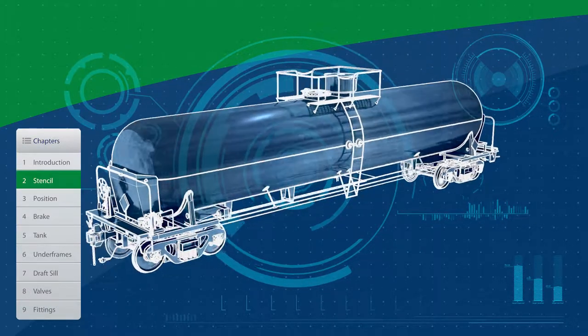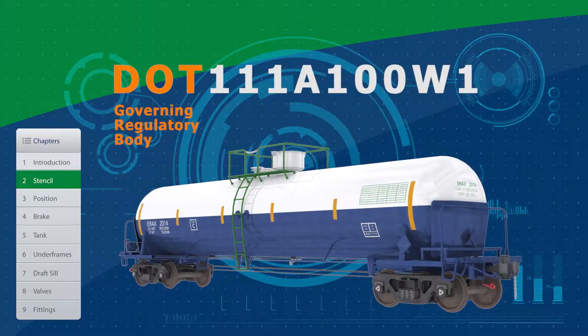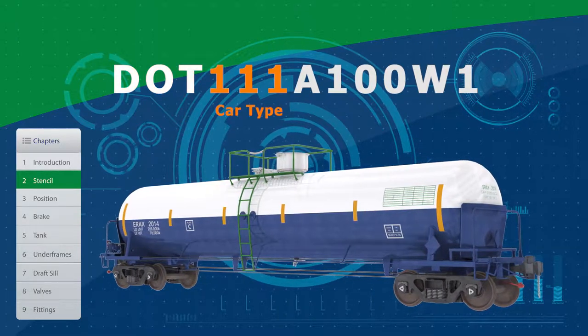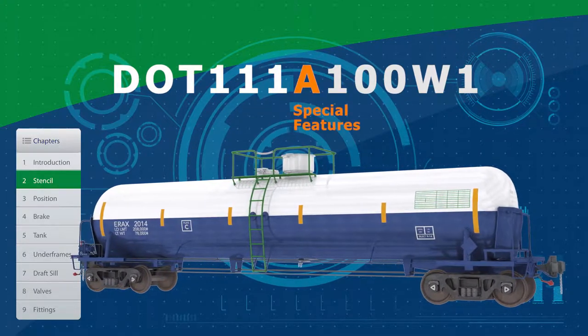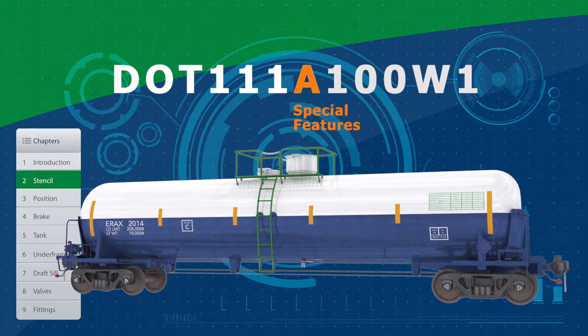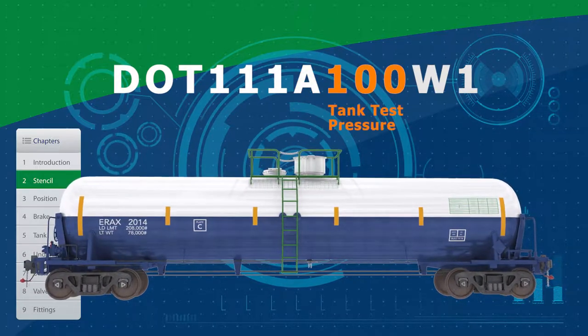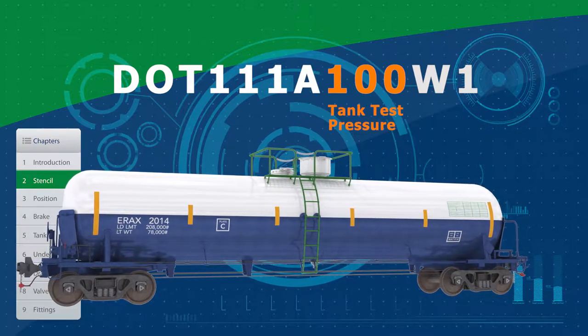The stencil provides valuable information about the car. The first three letters indicate the governing regulatory body that the cars are operating under. The next three numbers indicate the car type. The next letter is a separator that may indicate special features, such as thermal or head protection. The next three digits indicate the tank test pressure, which can range from 60 to 600 psi.